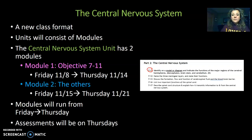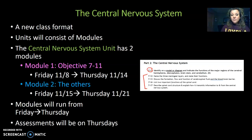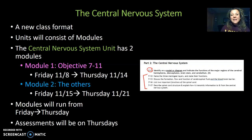Module two for unit five, the central nervous system, is going to cover the rest — the other four objectives about the meningeal layers, cerebral spinal fluid, functions of the spinal cord, and the structure of the spinal cord as well. My plan is to have modules run from Friday to Thursday. I feel like if the weekend is at the end of the module, you're going to save everything for the very last minute. So by placing the weekend towards the beginning of the module, I'm hoping to get you doing the activities chunk by chunk, bit by bit, throughout the week.